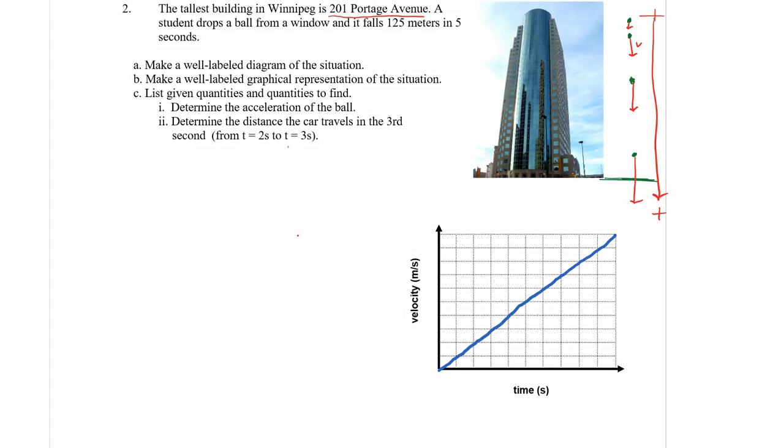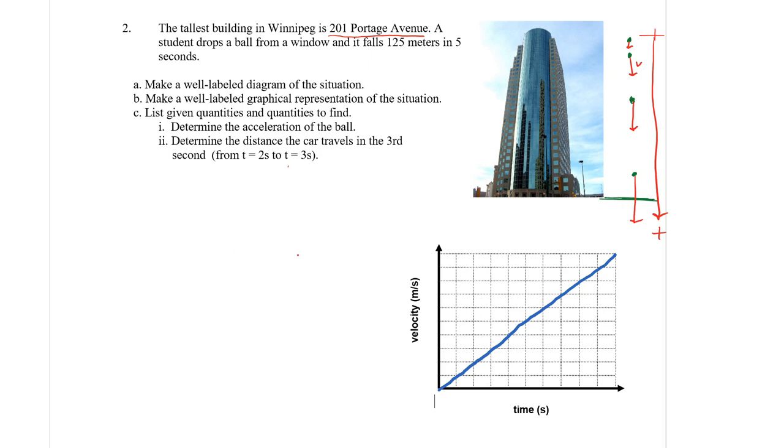List the given quantities and quantities to find. It says they dropped the ball from a window and it falls 125 meters. Normally we'd say delta X equals 125, but let's say that delta Y in this case is equal to 125 meters. Is that in the positive direction or negative? Downward, which is the positive direction. The initial velocity, because it says the student drops the ball, not throws it down, means that the initial velocity is zero.